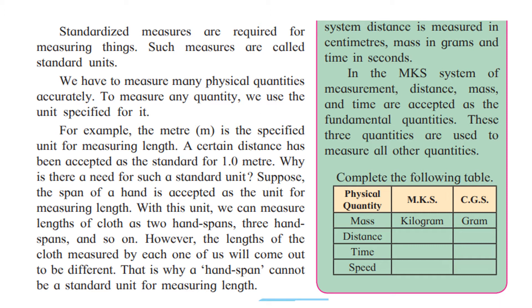We have to measure many physical quantities accurately — we cannot make mistakes. For example, a person constructing a building must have every minute detail perfect. To measure any quantity, we use the unit specified for it. For example, the meter — written as 'm' — is the specified unit for measuring length. A certain distance has been accepted as the standard for one meter.